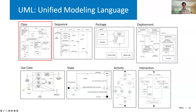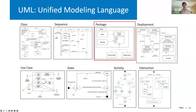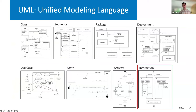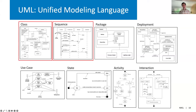UML defines 14 types of diagrams and they're all covered in UML Distilled. However, eight of the 14 are more broadly useful: class diagrams, sequence diagrams, package diagrams, deployment diagrams, use case diagrams, state diagrams, activity diagrams, and interaction diagrams. Many of these have overlapping scope and they're most powerful when used in combination with each other to communicate a particular message to a particular audience. Here I'll talk only about class and sequence diagrams in detail and also show some examples.